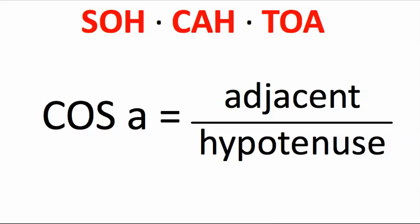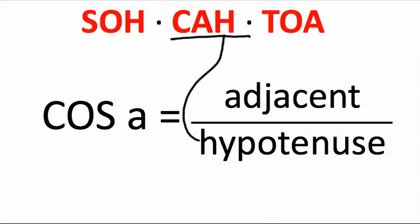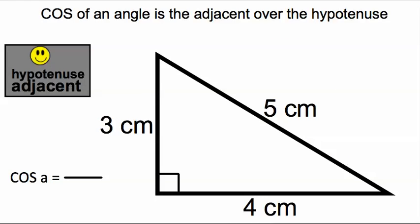In SOH-CAH-TOA, we are on the part where we are talking about the CAH. The C stands for cosine, the A stands for adjacent, and the H stands for hypotenuse. So the cosine of an angle is the adjacent side over the hypotenuse.